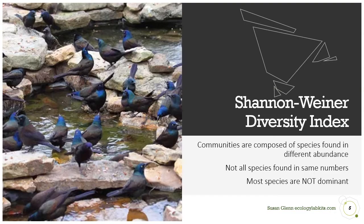The diversity index we're going to use is the Shannon Wiener Diversity Index — there's a lecture that goes with my class on diversity and I'll put a link at the end of this video. When we look at the composition of communities, some species are really common and some are not. Here's a picture of a bunch of grackles — this is pretty much dominated by one species, so it's not terribly diverse. Most species are actually quite rare and difficult to find.